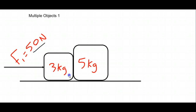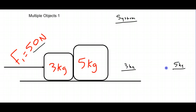When working with systems that have multiple objects, you want to think about breaking it down into two categories of forces. First, think about the system, then think about the individual objects — the 3 kilogram object and the 5 kilogram object. Sometimes it's easiest to work with individual objects first, sometimes with the system — you have to test which one you have the information about.